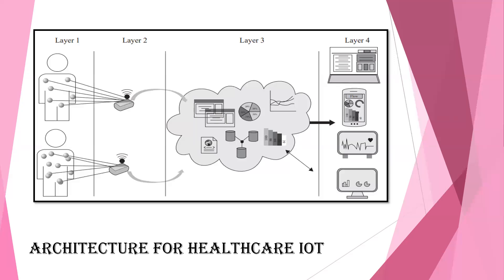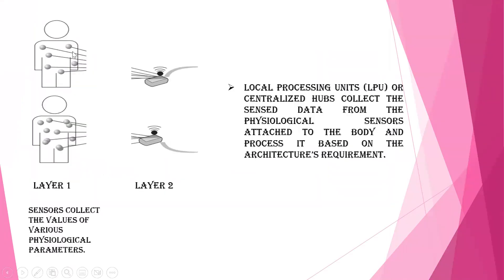In layer one, these are the sensor nodes connected across the body. These sensors collect all the parameters necessary for the particular human body. In layer two, this is the local processing unit (LPU), which collects all the sensed information from layer one — all sensors attached to the body — and transfers that data to layer three.